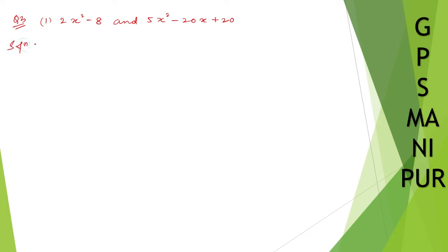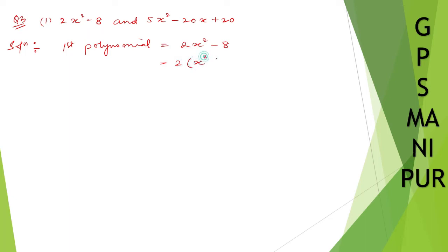So first let me write down the first polynomial. The first polynomial is equal to 2x squared minus 8. From these two terms I can take 2 common, so it will be 2 into x squared minus 4. Now x squared minus 4 is x squared minus 2 squared, so it becomes 2 into (x plus 2)(x minus 2).